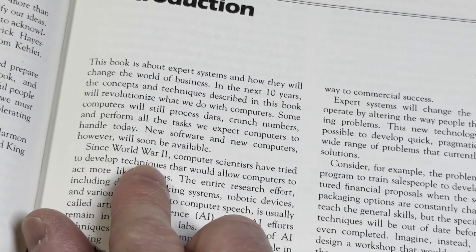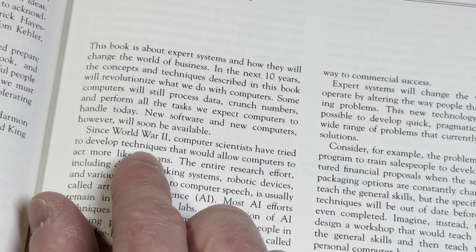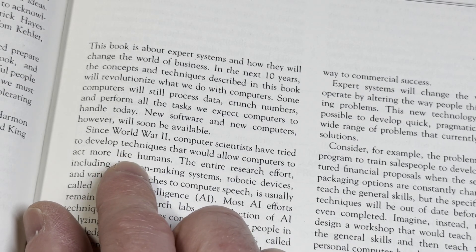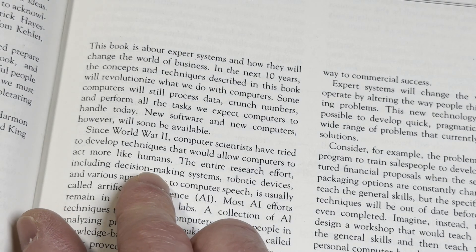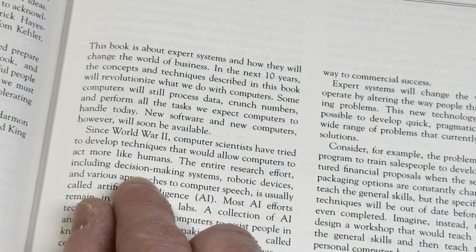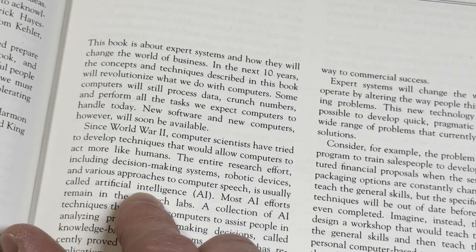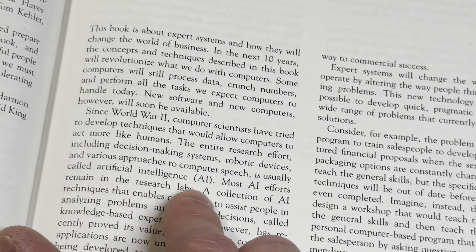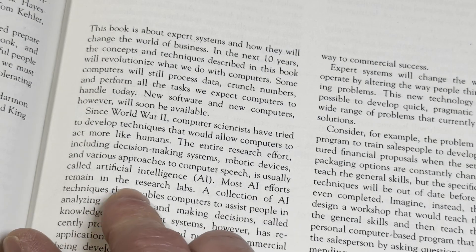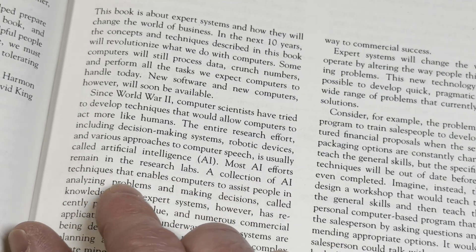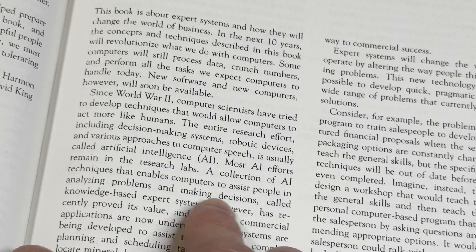Since World War II, computer scientists have tried to develop techniques that would allow computers to act more like humans. The entire research effort, including decision-making systems, robotic devices, and various approaches to computer speech, is usually called artificial intelligence, AI. Most AI efforts remain in the research labs.